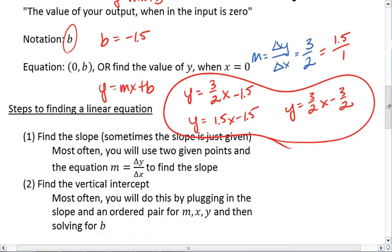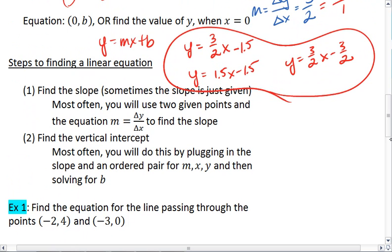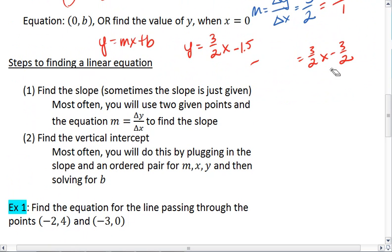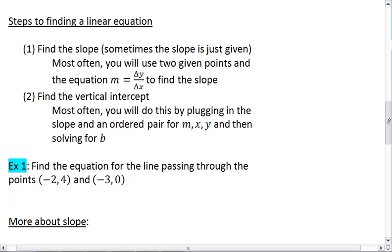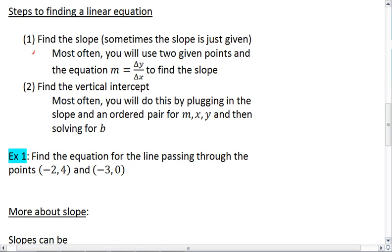Well what we went through here was actually the steps to finding a linear equation. So let's actually write out what those steps are. Your first step is to find the slope. Sometimes the slope will just be given to you. But more often than not you'll be given two points and you use the equation of m equals change in y over change in x, which is y2 minus y1 over x2 minus x1 to find the slope.